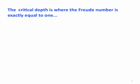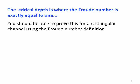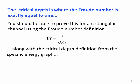The critical depth turns out to be where the Froude number is exactly equal to 1. Now, you should be able to prove this for a rectangular channel using the Froude number definition. That is, the Froude number is the velocity over the square root of g y. And you'll need the critical depth definition from the specific energy graph on the previous slide. That is, the critical depth is q squared, here where q is the flow per unit breadth over g.